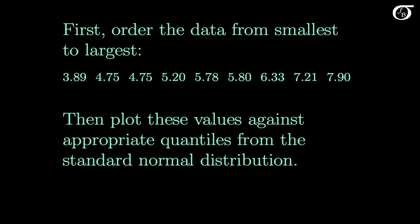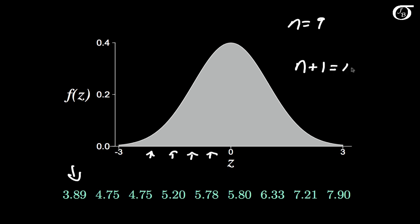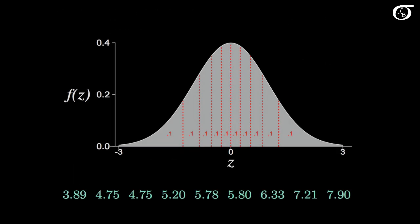Here we have the standard normal probability density function truncated at minus 3 and 3, and down here we have our 9 sample values. What we're going to do is place 9 values for a standard normal random variable such that the distribution is split up into n plus 1, or 10, equal areas. So we're going to split this distribution up into 10 equal areas because we're placing 9 values, and that looks like this.